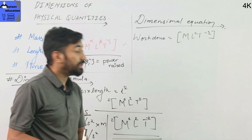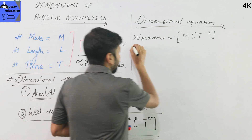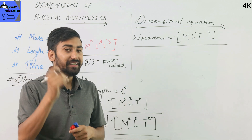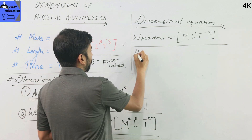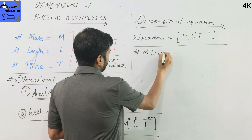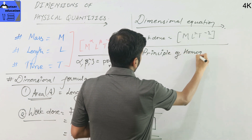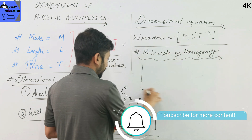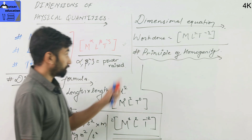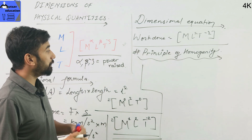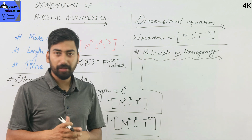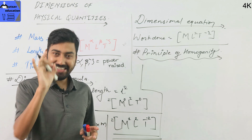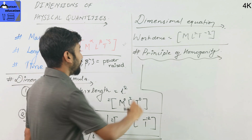This is how you practice the dimensional formula — this is the principle of homogeneity. Each and every term on each side of the equation must have the same dimensional formula. This is the principle of homogeneity. So this is why you can check physical equations — the principle of homogeneity states that this equation must be equal on the right side of the equation.